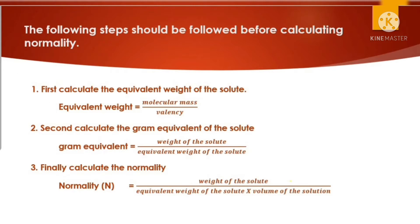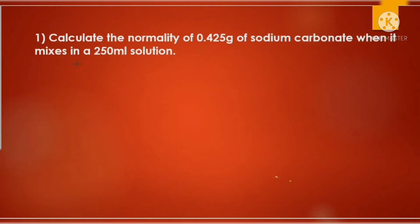Weight of the solute divided by equivalent weight of the solute is nothing but gram equivalent weight. So normality is the number of gram equivalents of a solute per liter of solution. If you follow all these steps, it is very easy to calculate normality. Let us see some problems.